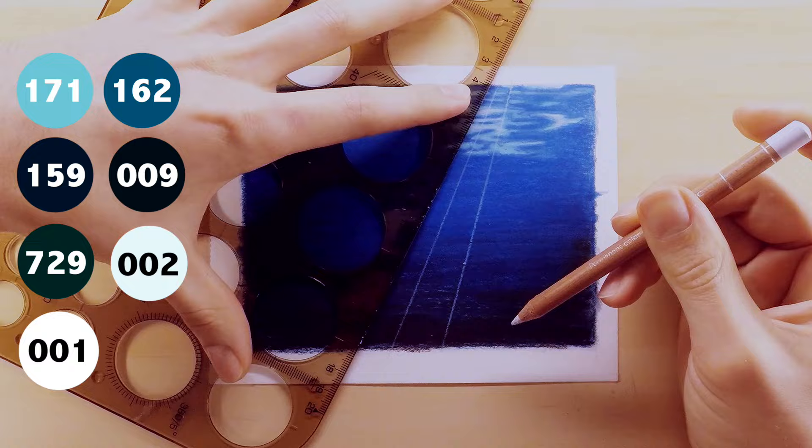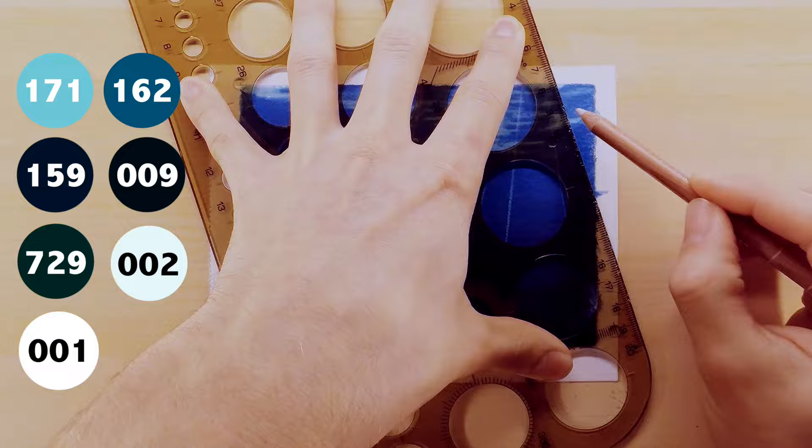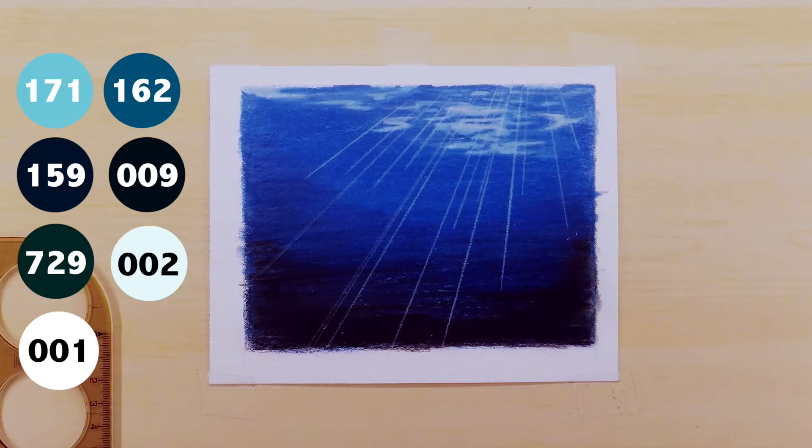The next thing I do is off the side of my paper I mark my vanishing point for my light source.